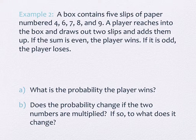A box contains five slips of paper, numbered 4, 6, 7, 8, 9. A player reaches into the box and draws out two slips and adds them up. If the sum is even, the player wins. If it's odd, the player loses. Everybody with me?